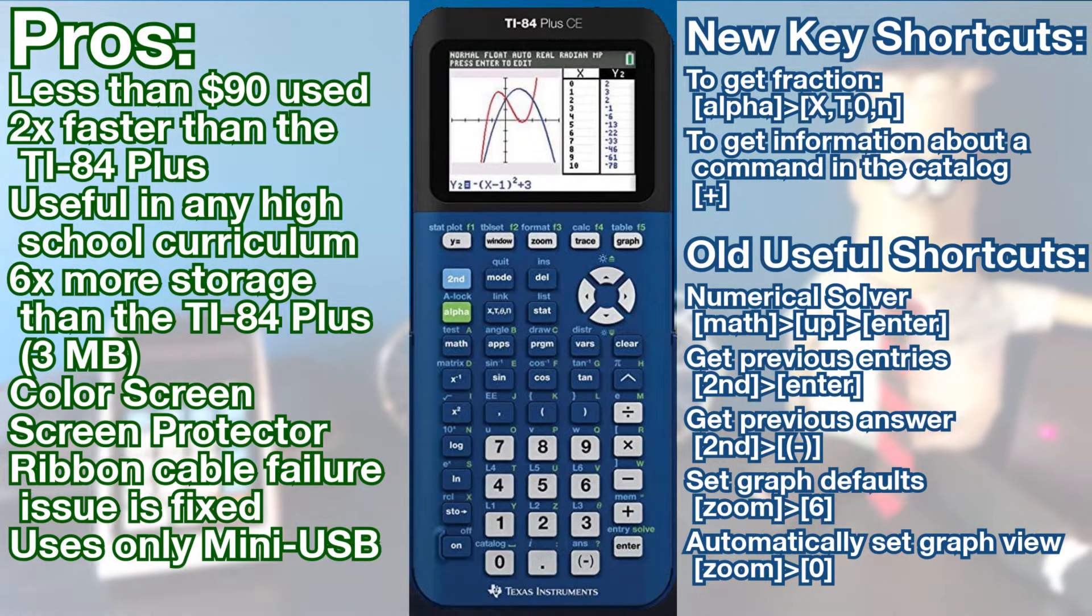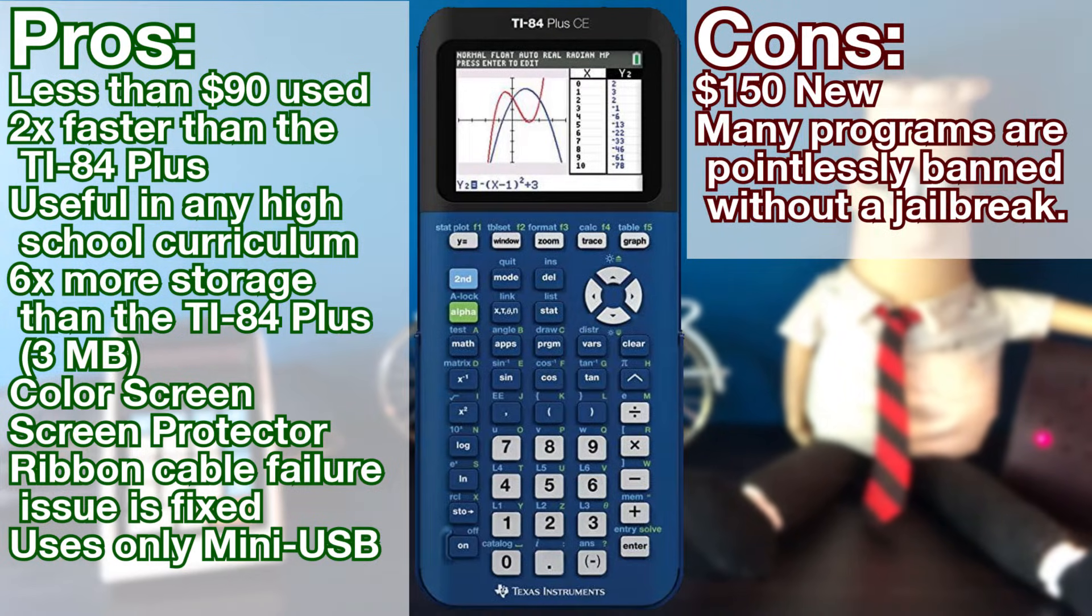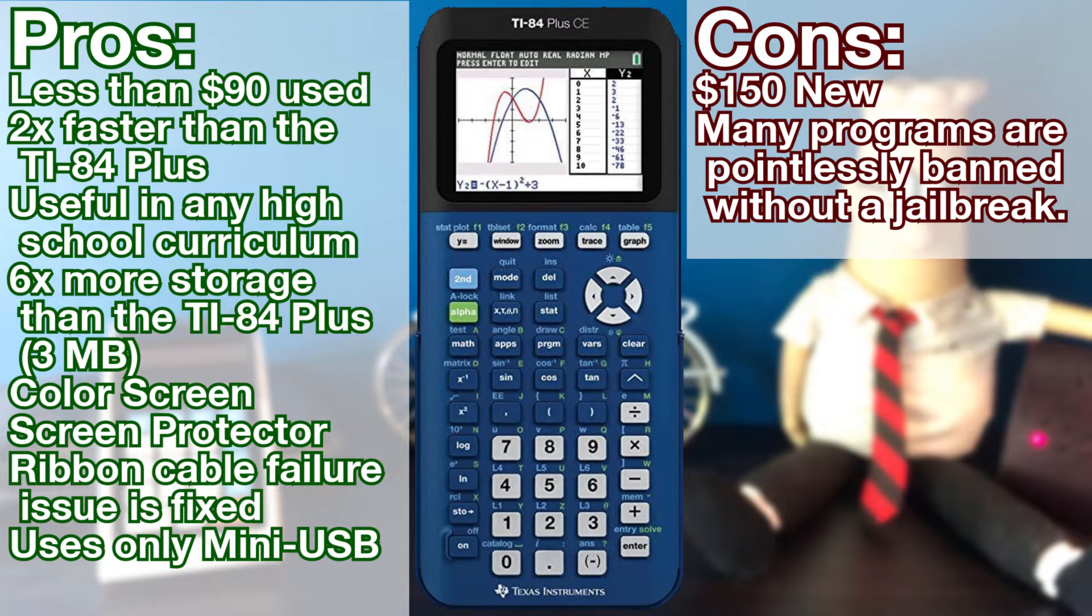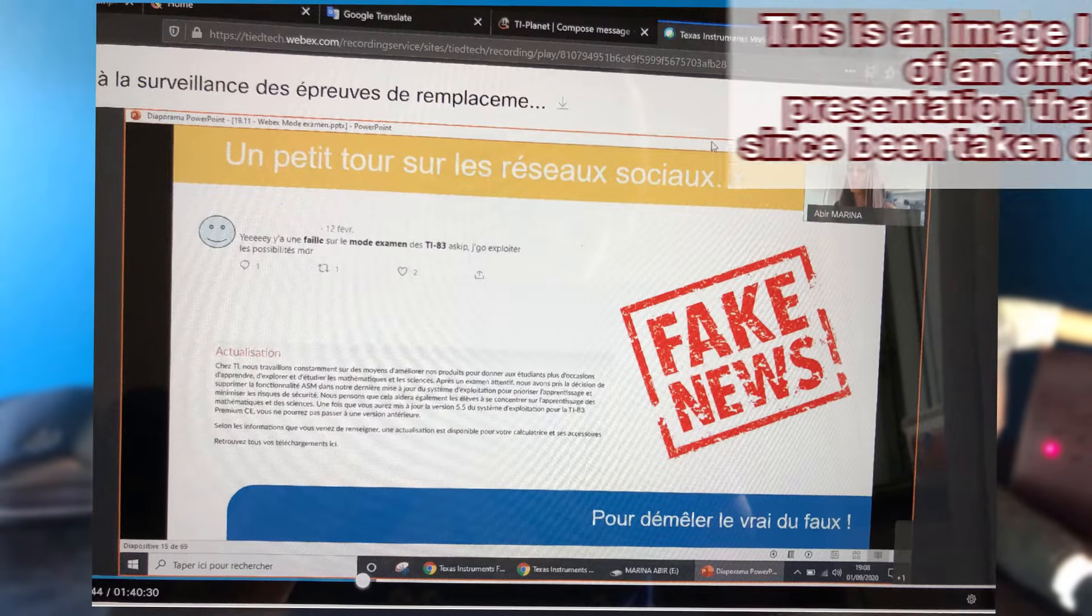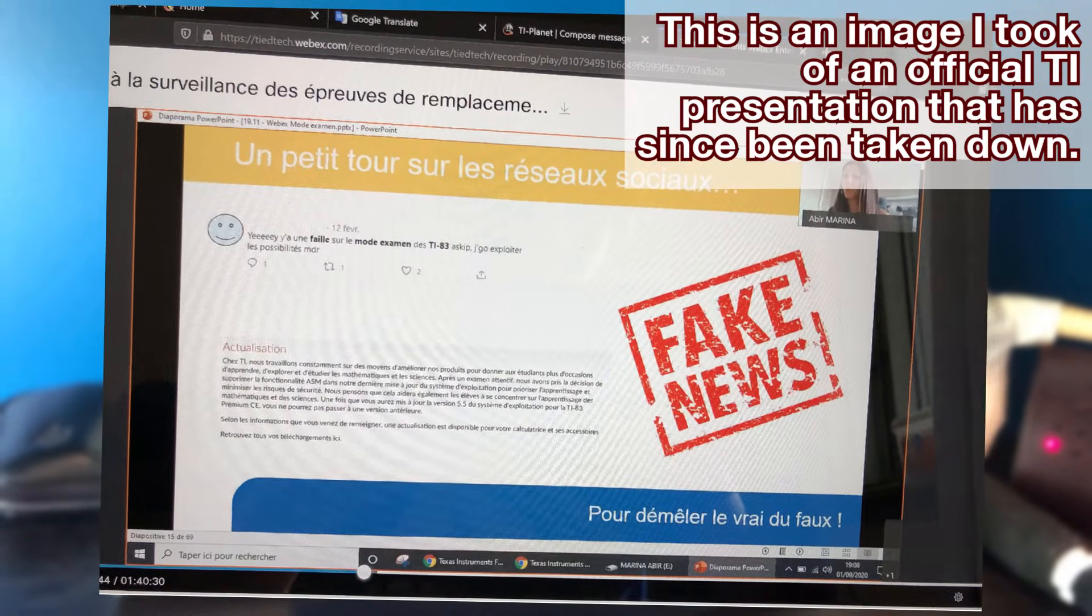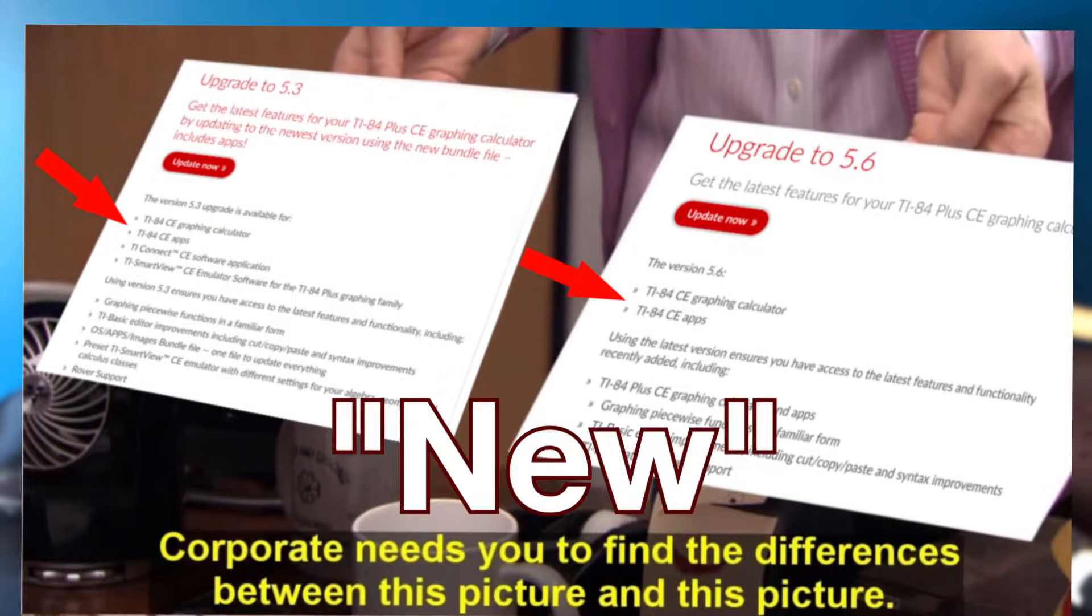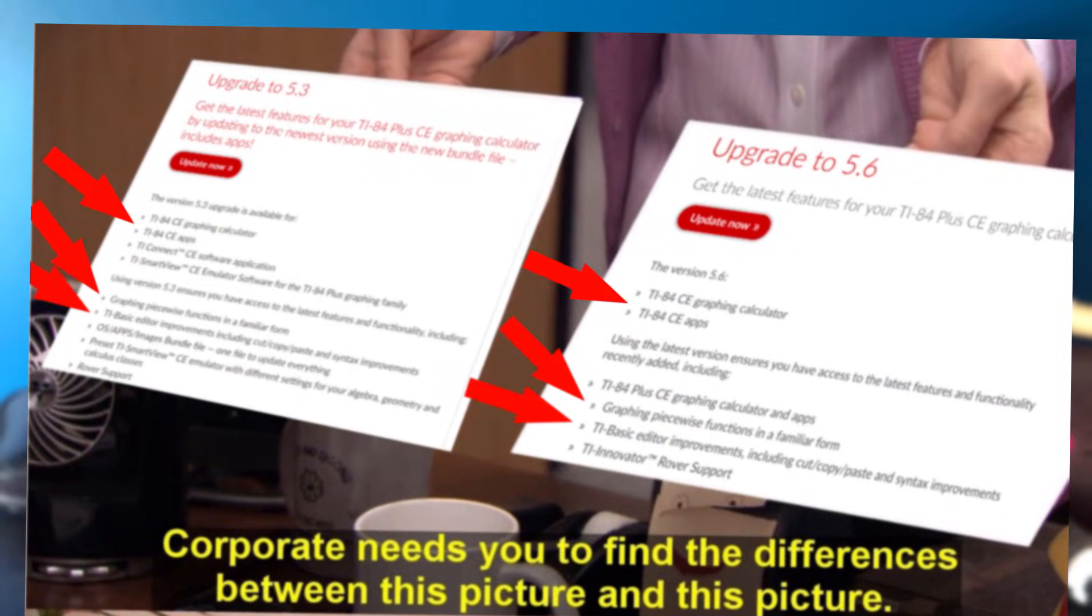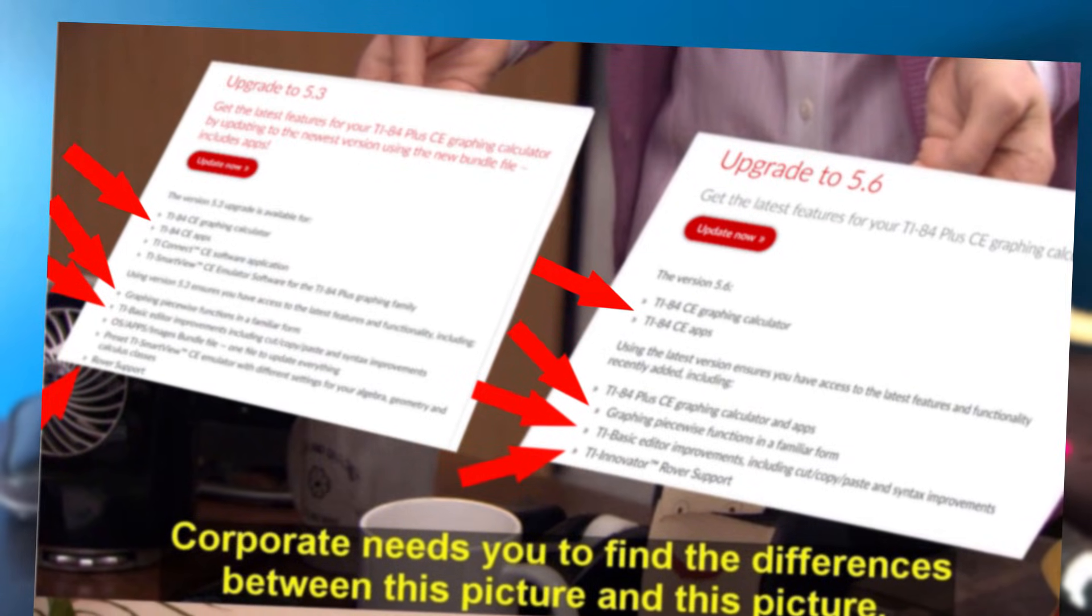I should warn that these software updates do sometimes remove features, such as in 2020, an OS update banned most programs from running on the calculator. TI did this because of a massive security flaw in the calculator's exam mode. TI tried to blame this flaw on programs, even though the flaw had nothing to do with programs. In fact, all of TI's new selling points have been reused since 2017, which was the last major good update. That's not to say the TI-84 Plus CE is a bad calculator, though.